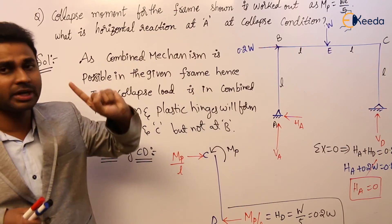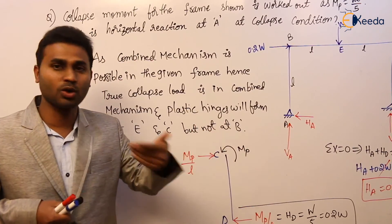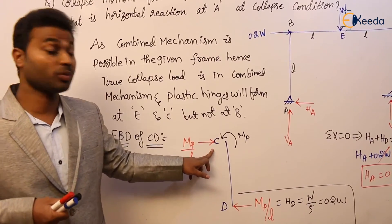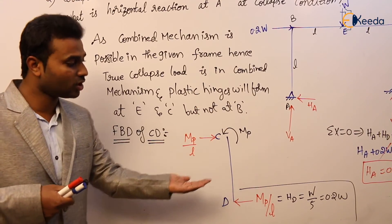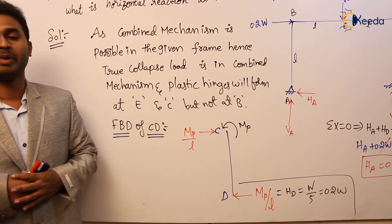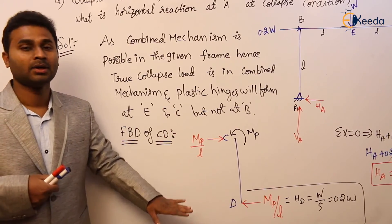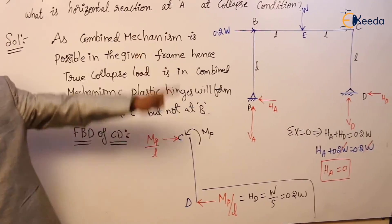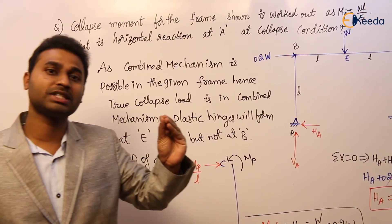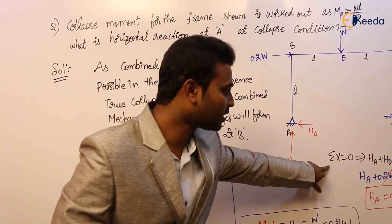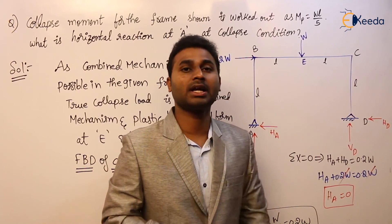We don't know the moment at B, but we know the moment at C, which is why we consider the free body diagram of CD. At D it is a hinge, so no moment. At C it is a plastic hinge, so plastic moment MP develops in the anti-clockwise direction. To resist it, the reaction develops in the clockwise direction, with magnitude MP/span = MP/L = WL/5 divided by L = W/5. This gives HD. Then using sigma_x = 0, that is HA + HD = 0.2W, we can calculate HA.